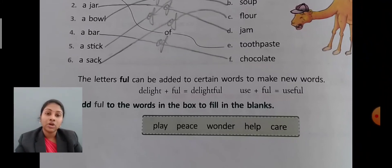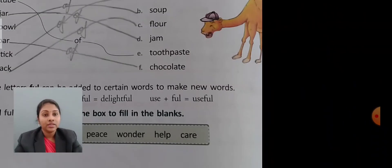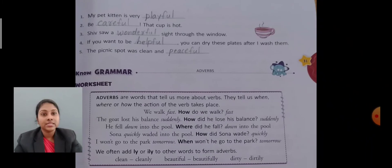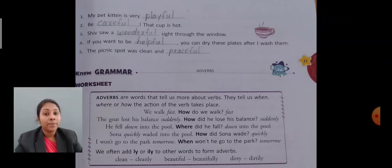The words in the box are: play, peace, wonder, health, and care. First sentence: 'My pet kitten is very playful' — play plus full equals playful. Second sentence: 'Be careful, that cup is hot' — care plus full equals careful.